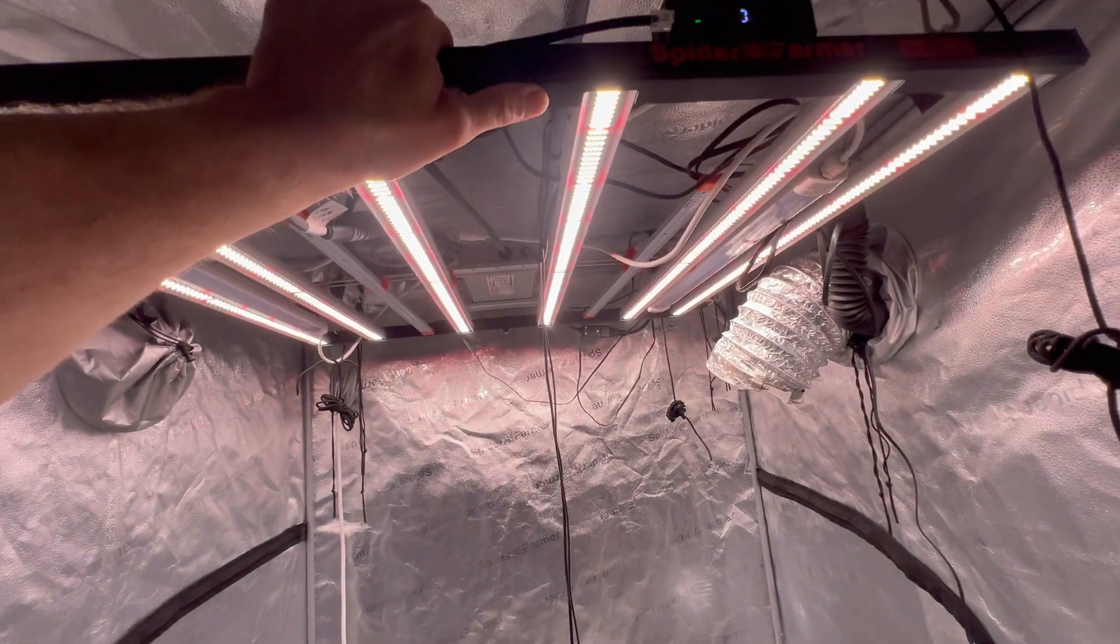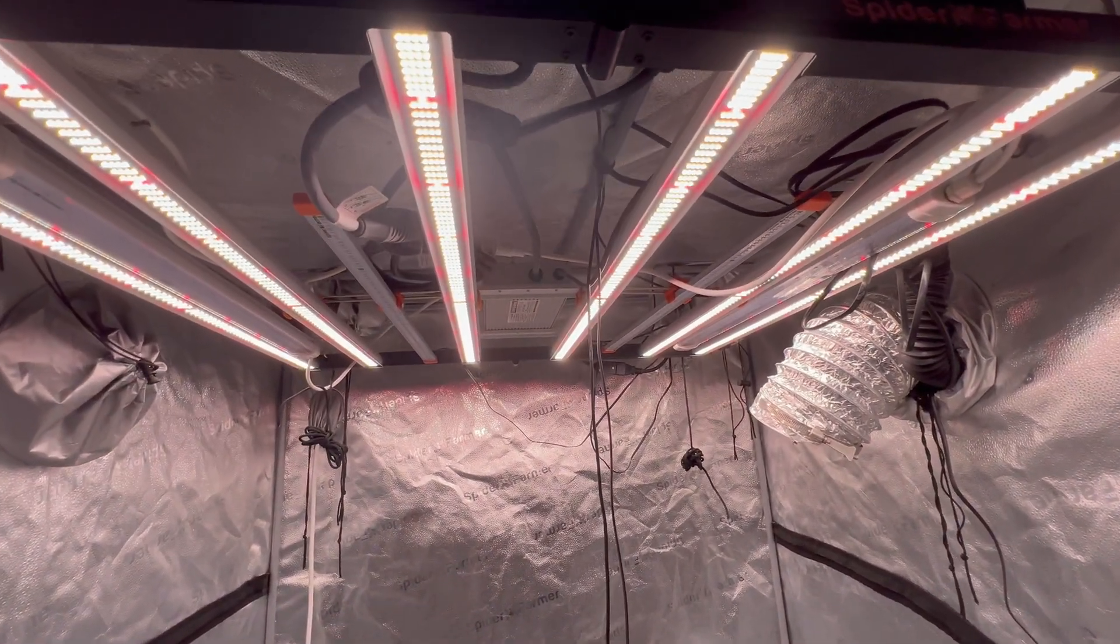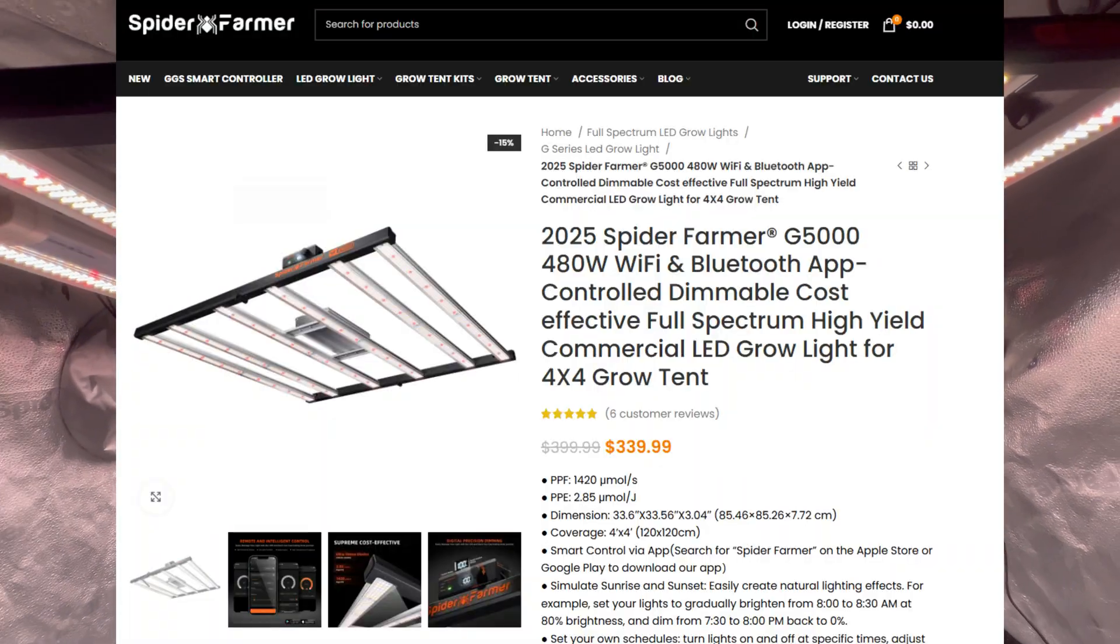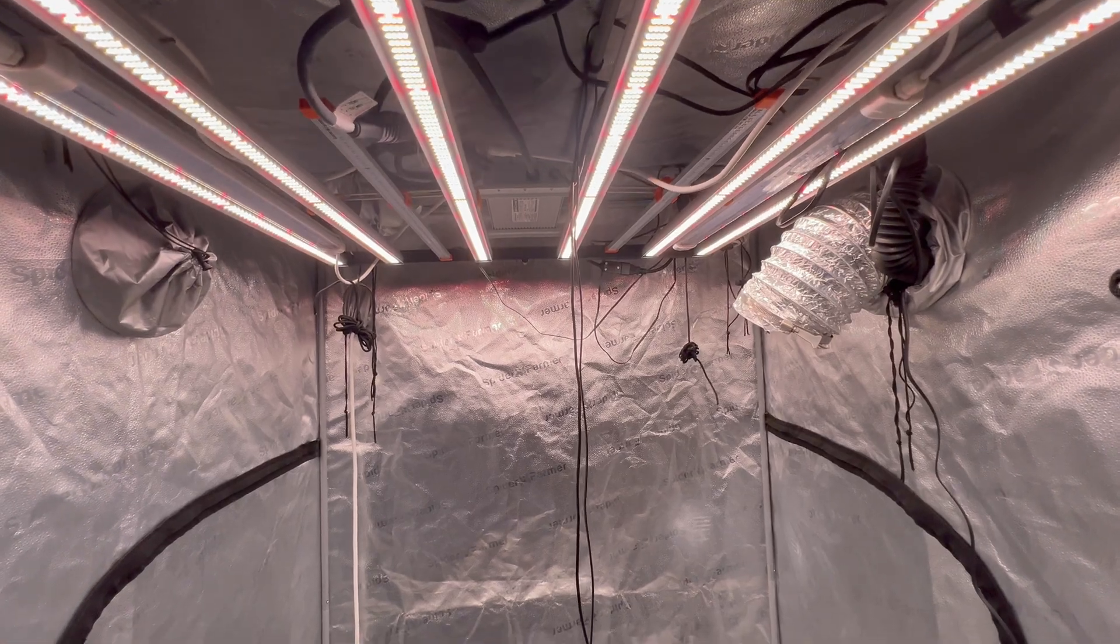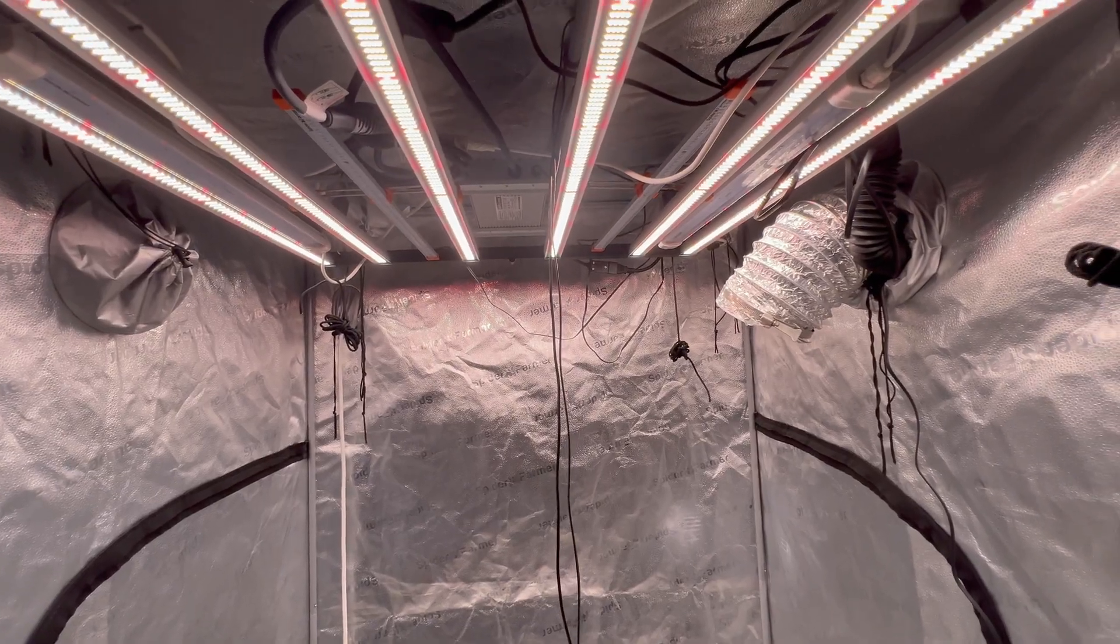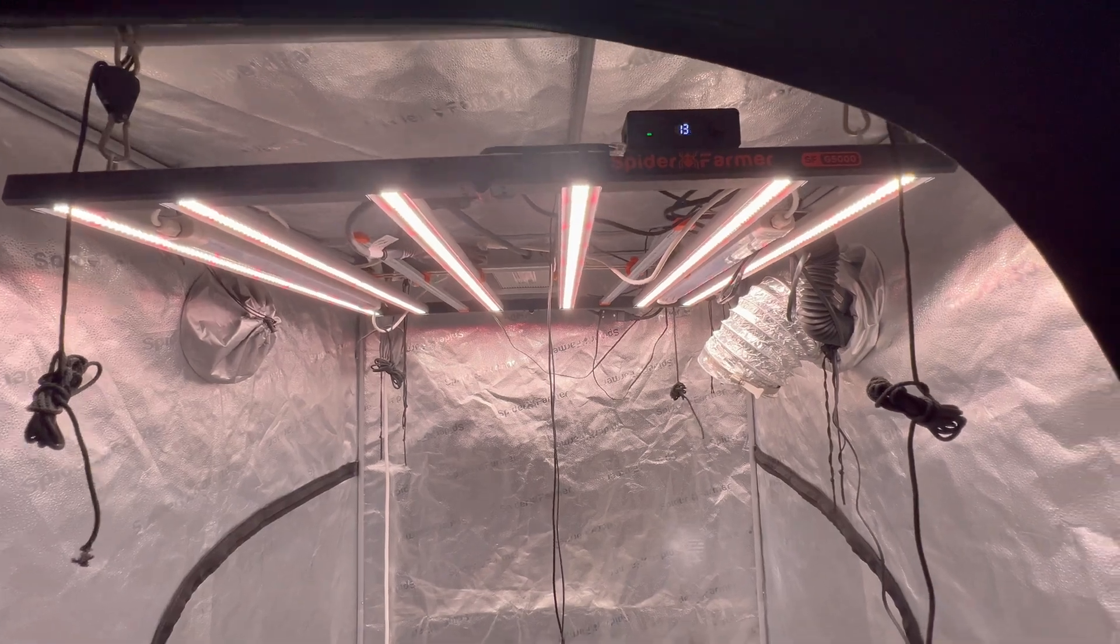That is the G5000, this is their more affordable bar style light. It is made with Bridge Lux diodes instead of the Samsung EVO diodes so it does make it a little bit less cost effective. I think this is $396, so not a bad price for a really good quality bar style light.